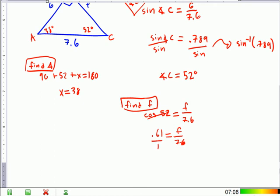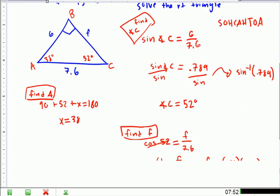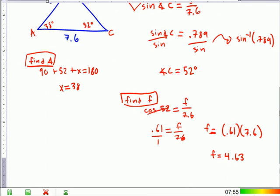F over 7.6. And then we go ahead and cross multiply. Please remember to put the 0.61 on top. So we get f equals 0.61 times 7.6. And what does that equal? What does it equal? 4.62? 4.63.